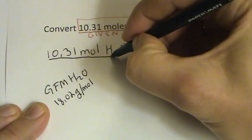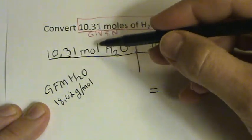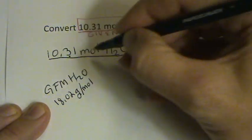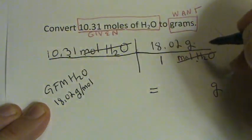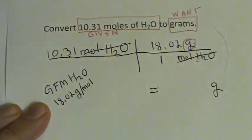Lots of people like to just extend this over here. But really, we're going to multiply 10.31 moles of water times this conversion factor here. And when we do that, you'll see that the moles cancel out. And we're actually left with the grams that we were looking for.